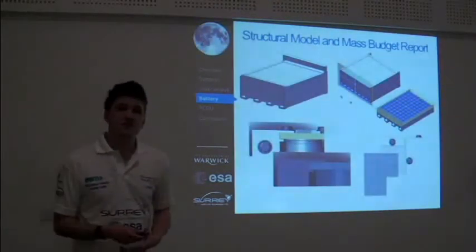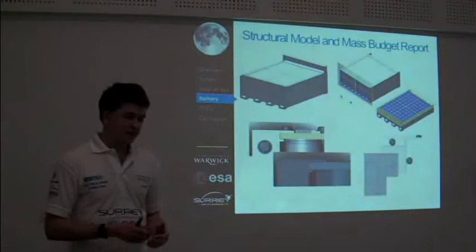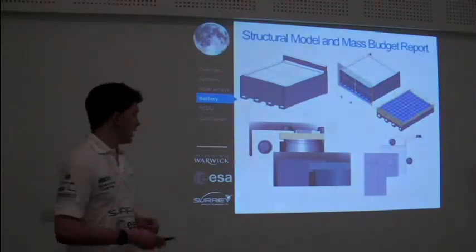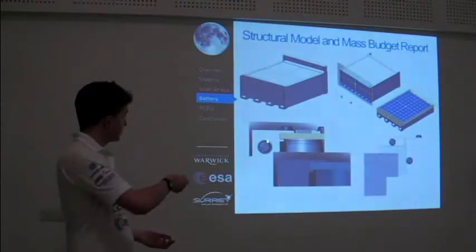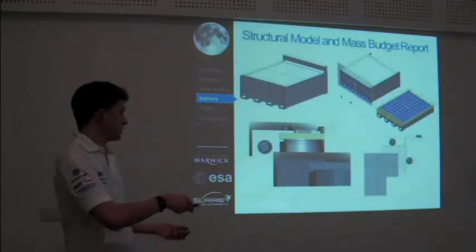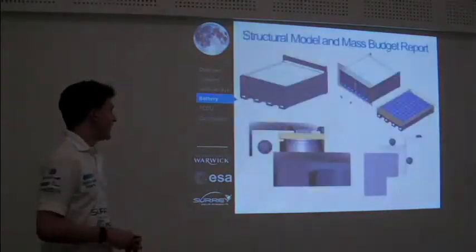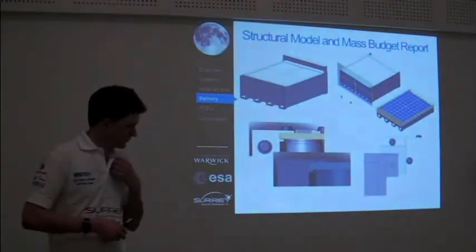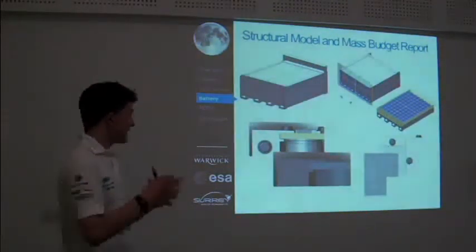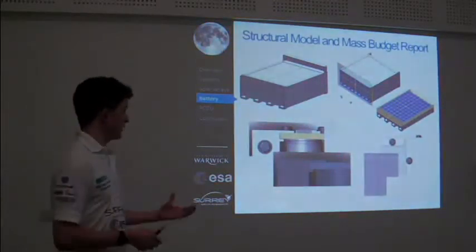The mechanical analysis basically starts by constructing a structural model. This entails removing all the unnecessary complicated details, such as manufacturing tolerances shown here, or bolt holes shown here, which are modeled using split lines. The aim of the structural model is to reduce the computational time by simplifying it and reducing the number of elements within the model itself.